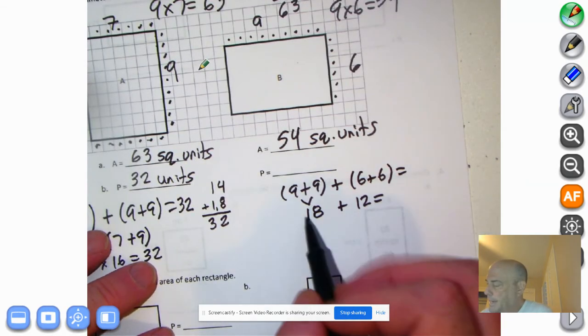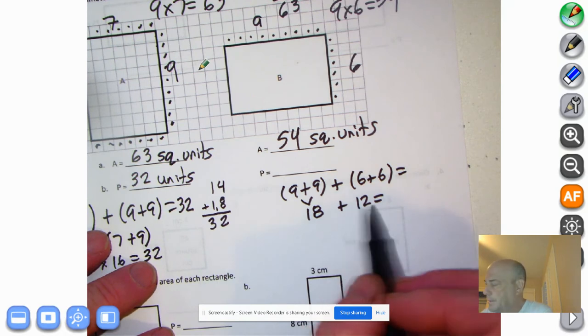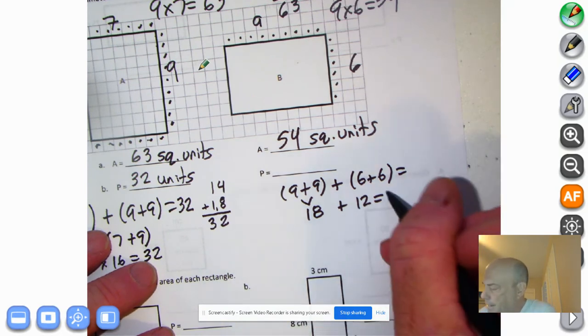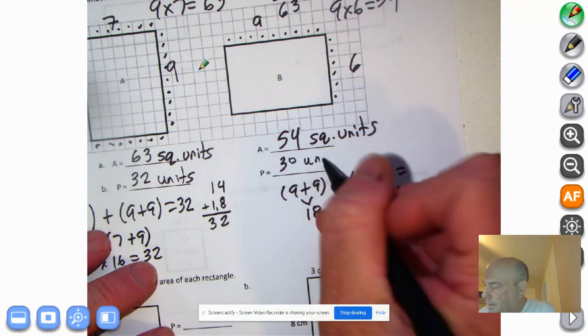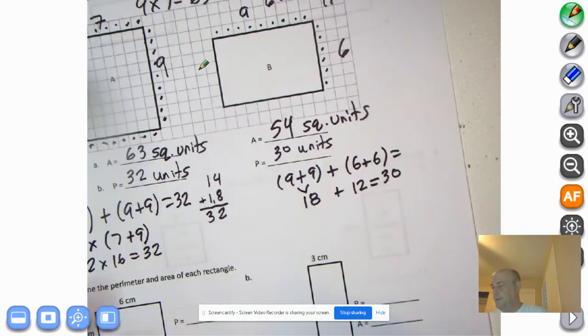I can just say, okay, 18 plus 10 is 28 plus the other two, 29, 30. And our answer is 30 units. Voila. We're done with those two.